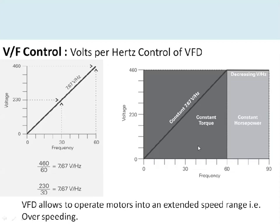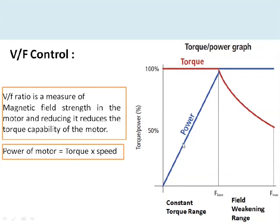Above the base speed, increasing frequency increases motor speed, but the torque decreases. Since power equals speed times torque, and as speed increases while torque decreases, the power remains constant — this region is therefore called the constant power region. The VFD allows motors to operate in an extended speed range above the rated base frequency, which is not possible without a VFD. Above base speed, the V/F ratio decreases, causing flux to decrease and therefore torque to decrease as well.